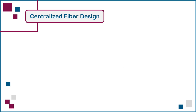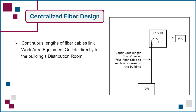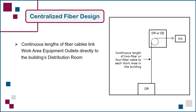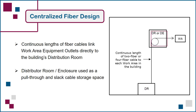An alternate centralized fiber design suitable for smaller buildings uses continuous lengths of two fiber or four fiber cables to directly link each work area equipment outlet to the building's distributor room, as shown here. In this design, the distributor room or enclosure is used simply as a pull-through and slack cable storage space, with each cable entering and exiting the DR or DE without any splicing or connectorization.